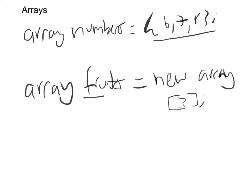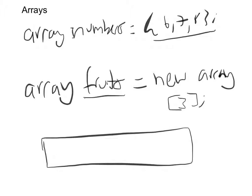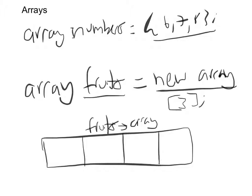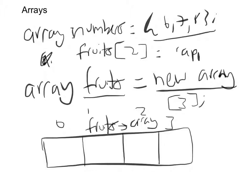When the compiler sees that line, it creates a 'fruits' memory location and allocates space for the array. If you say 3, remember computers start from zero, so you'll have positions 0, 1, 2, 3 — one more slot than the number you give. The array starts empty. To fill it in, you'd then write: 'fruits[2] = apple'. The compiler finds position 2 in the fruits array and places 'apple' there.